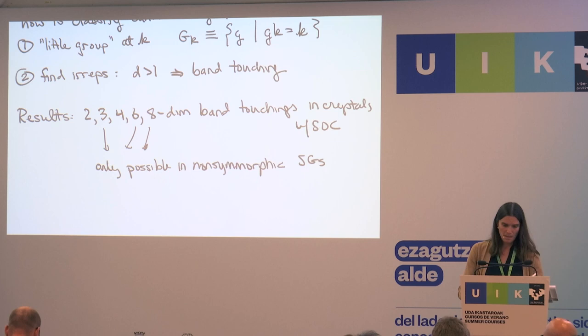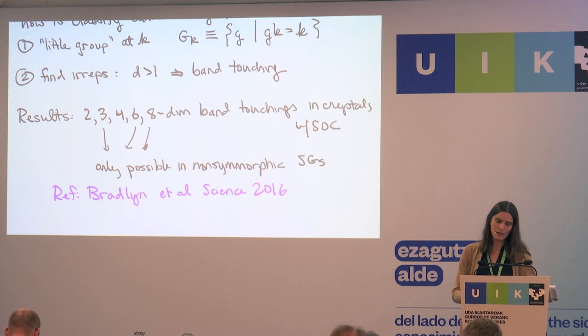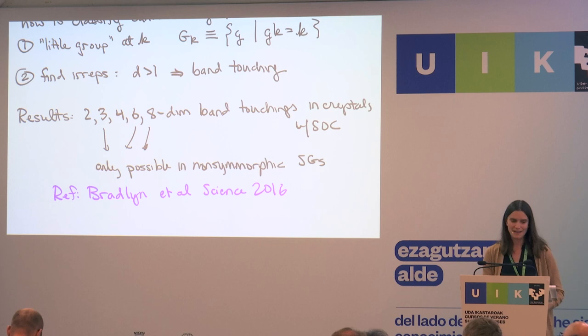These results are in a paper by Bradlyn et al. from 2016 — this is actually when I first started working with Maya. We outlined this classification and made a list of all of these. The most interesting one I wanted to tie back to yesterday's discussion is the spin-1 Weyl fermion.